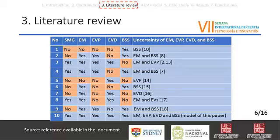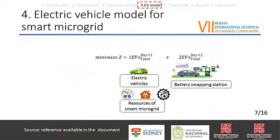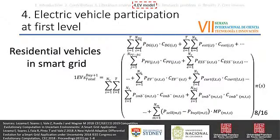Moreover, we listed the uncertainty of four approaches and our model is the most complete. The residential electric vehicles and battery swapping stations represent the electric vehicle model. Both represent two levels of participation. The residential electric vehicle contemplates the operation of a Smart Microgrid and a battery swapping station, and is incorporated as an external agent. The main objective refers to the reduction of costs and the increase of income.